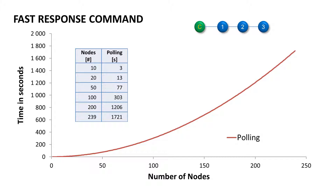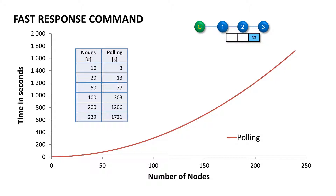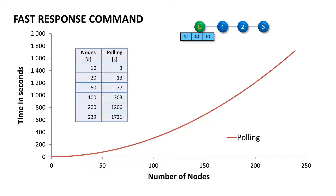That's the reason why we've developed the patented FastResponse command. This command basically sends out a broadcast query and on the way back the packet collects data from each node in the network. So instead of having 100 communications there and back in the case of reading data from 100 nodes, with the FRC you have just one communication which reads data from all 100 nodes at once.